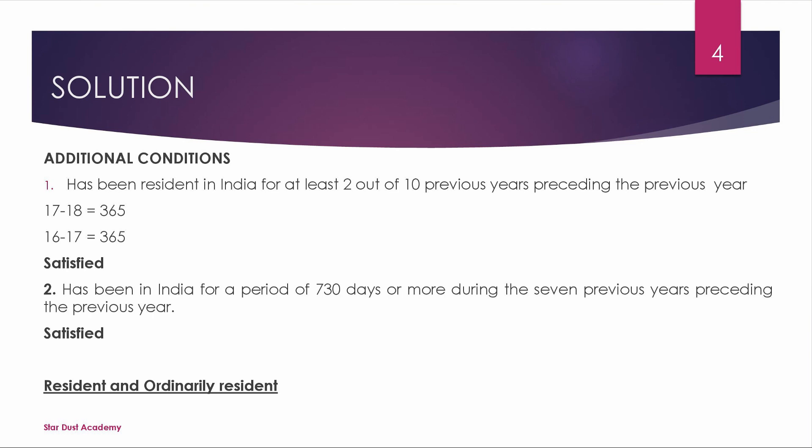Additional condition number 2: he has been in India for a period of 730 days or more during 7 previous years preceding the previous year. Previous year is 7 years back — that covers 17-18 and 16-17. We have 730 days satisfied. The additional conditions are satisfied.